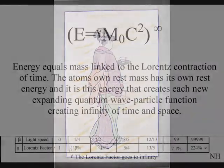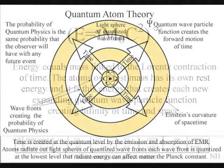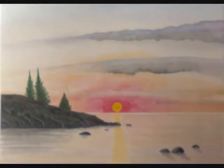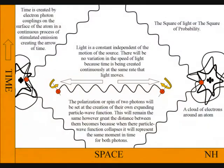We therefore live in a universe of mortal space-times, and each space-time is governed by Lorentz contraction of time. Because this is a continuous process at the same rate that light moves, the speed of light between the atoms will always be a universal constant, independent of the motion of the source.